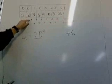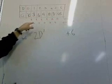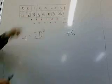6 plus negative 3 is 3. Okay, 3 plus 1 is 4. We're just following this pattern backwards.